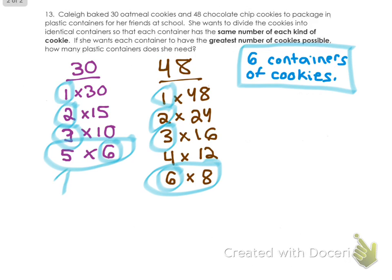that means that each container will have 5 oatmeal cookies and 8 chocolate chip cookies in it. If they asked you any sort of additional information like that, that's something great that you can find from greatest common factor. If you guys have any questions, please email me.